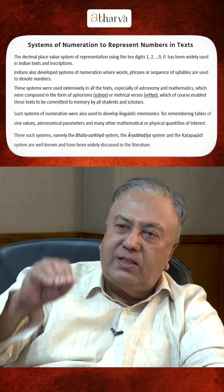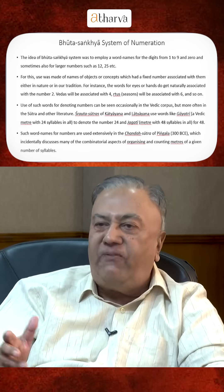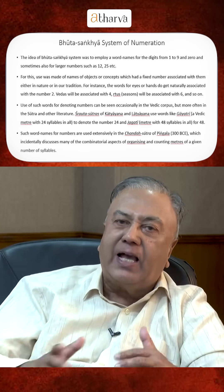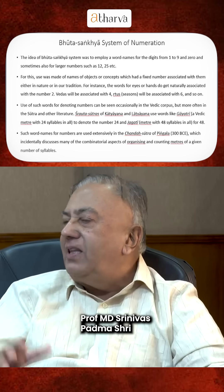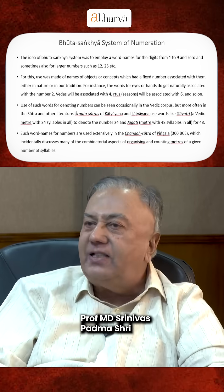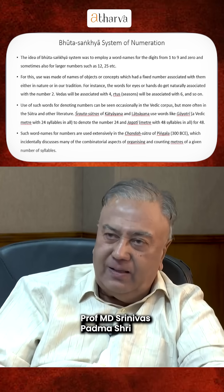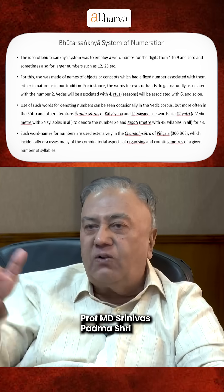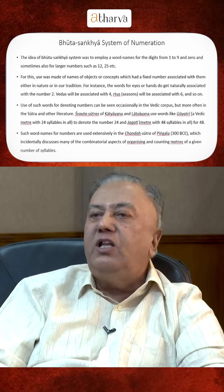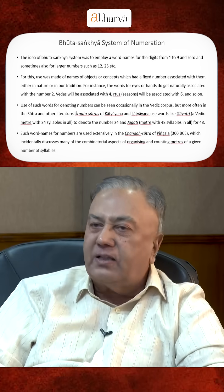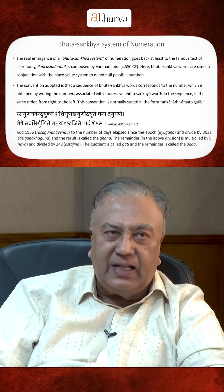The oldest system was what was called Bhutasankhya. That is, you use the fact that in common parlance, I means 2, Veda means 4, Vasu means 8 — as anyone who knows the Sanskrit tradition would know. Guna means 3, Ritu means 6 in India, not 4. All these words were used to denote numbers. This was called the Bhutasankhya system, which was used heavily both in Sanskrit and all Indian languages.